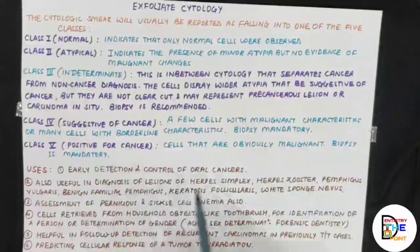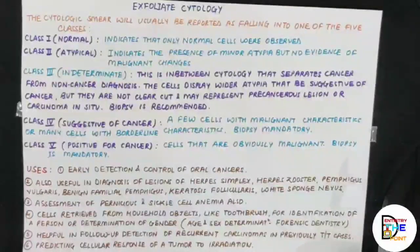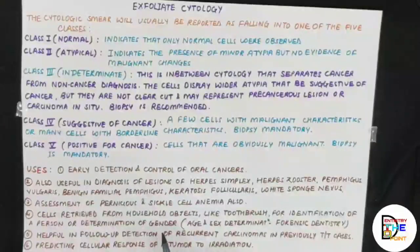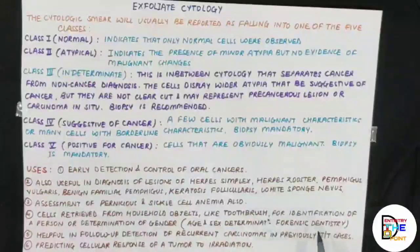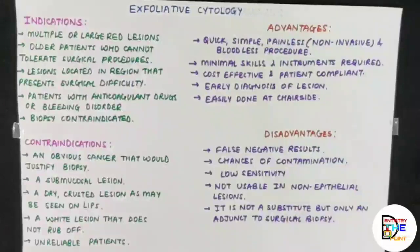The uses of exfoliative cytology include: early detection and control of oral cancers; diagnosis of lesions of herpes simplex, herpes zoster, pemphigus, benign familial pemphigus, keratosis follicularis, and white sponge nevus; assessment of pernicious and sickle cell anemia and nutritional deficiency anemia; identification of a person or gender determination from cells retrieved from household objects like a toothbrush; helpful in follow-up detection of recurrent carcinomas in previously treated cases; and predicting cellular responses of a tumor to irradiation.